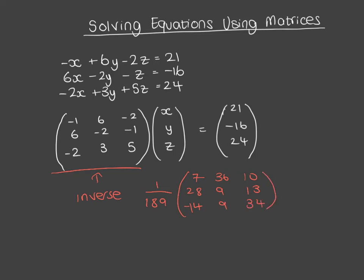So if you want to find (x, y, z), all you're going to do is multiply that matrix by this. Again, do it on your calculator. Make use of that calculator. You've got this matrix times (21, -16, 24).